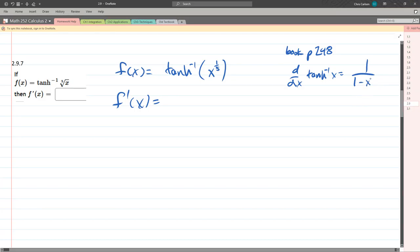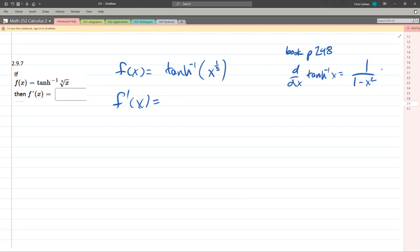1 minus x squared. I knew it wasn't right because that would have been the regular inverse tangent derivative, not the hyperbolic inverse tangent derivative. Okay, so we're finally ready to take derivative.